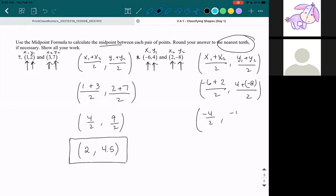4 plus negative 8, that's also negative 4. And then negative 4 divided by 2 is negative 2. And once again, negative 4 divided by 2 is negative 2. So this is your final answer.